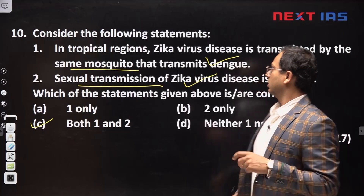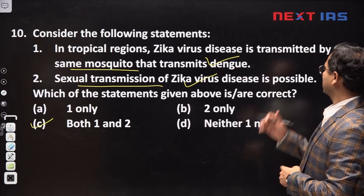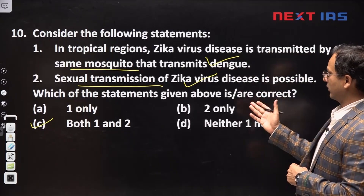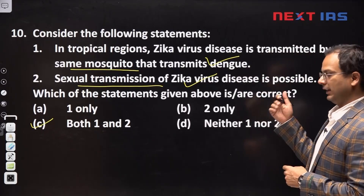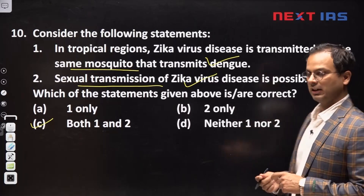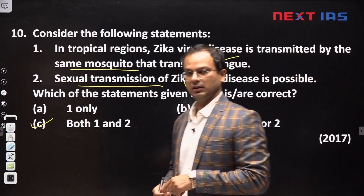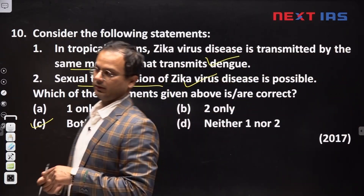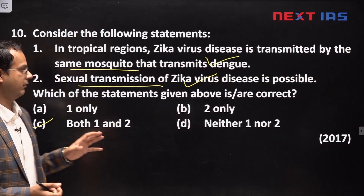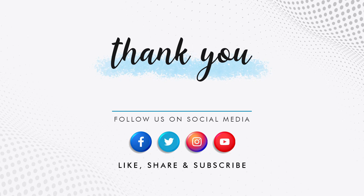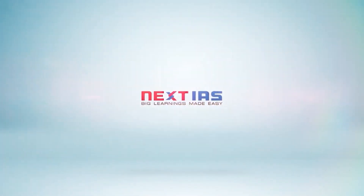So Zika is transmitted by the Aedes aegypti mosquito and can also be transmitted sexually. That concludes our discussion. Thank you everyone.